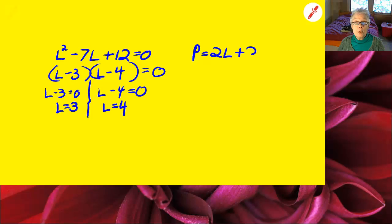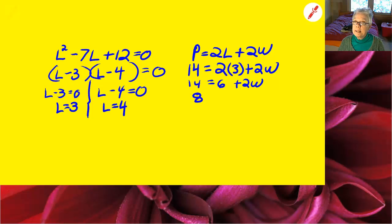Now I go back to the perimeter formula. If L equals 3, what is W going to equal? That's what I'm finding out right now. So 14 equals 6 plus 2W. Subtract 6 from both sides, I get 8 equals 2W. Divide both sides by 2 and I get W equals 4. And that is if L equals 3.